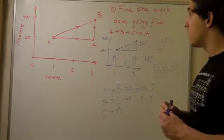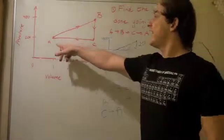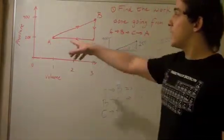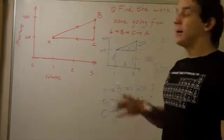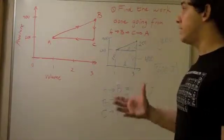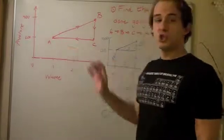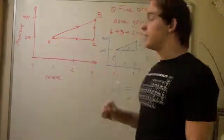Well, we're going from C to A. Now we see that pressure is constant. And now we can simply apply the formula. Work equals pressure, which is 200, times change in volume.